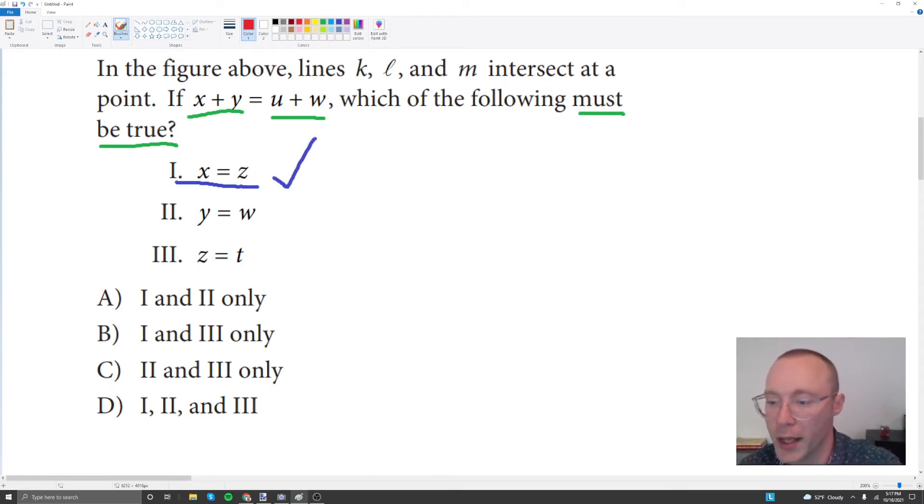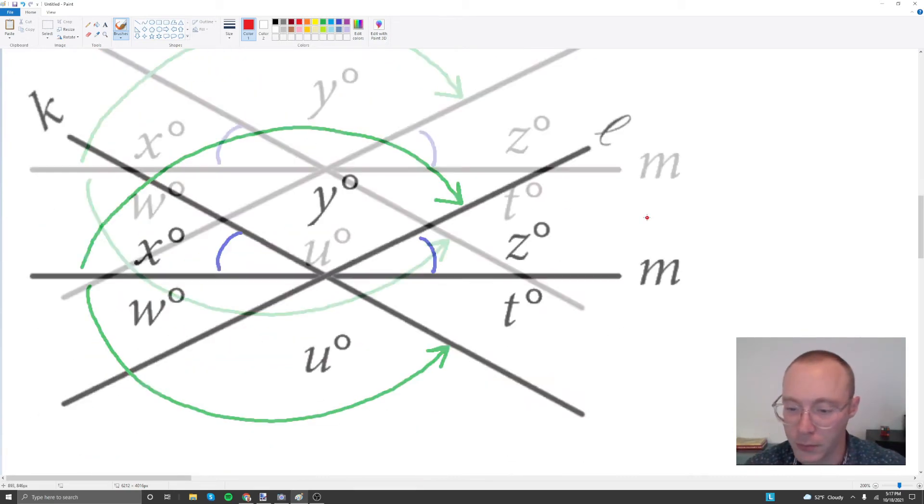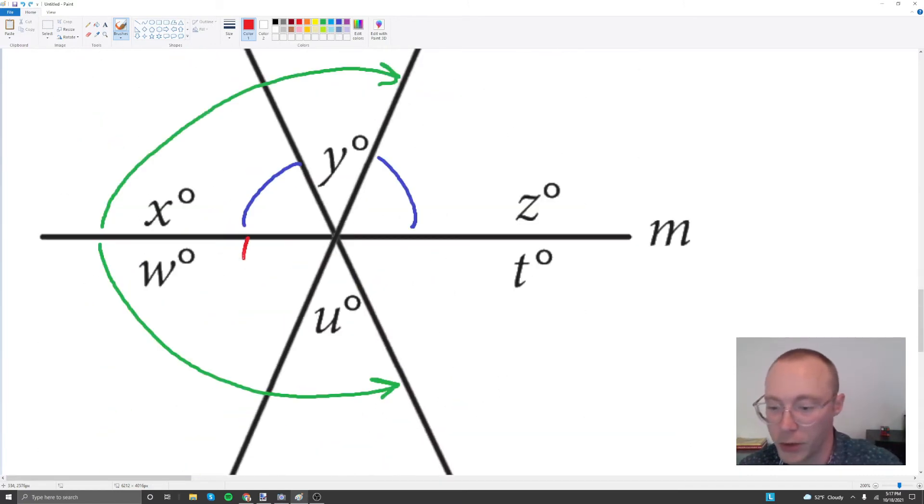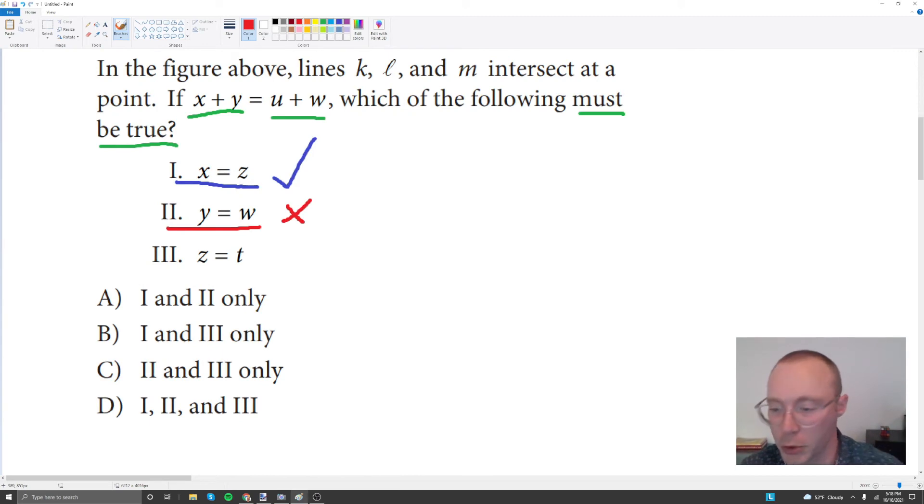Now let's look at the second statement. Angle y equals angle w. If we look down at our first alternative drawing, angle y has gotten bigger, but angle w has gotten smaller. We're going to have a problem here, because the two angles are not equal. We could check that in the second drawing as well. Angle w got bigger, while angle y got smaller. So those are not going to be equal in these two alternative cases. And thus, this does not have to be true.